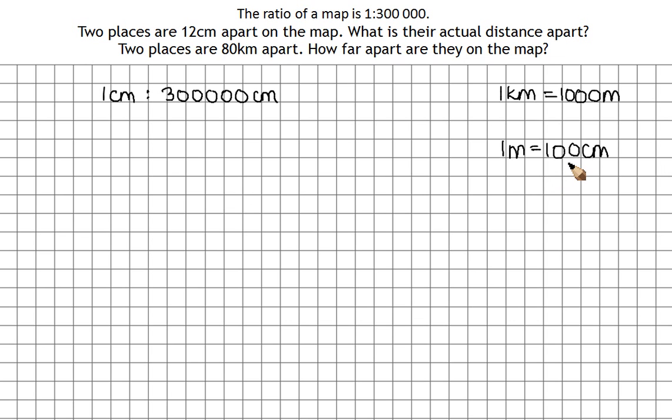If I'm changing centimeters into meters, to get from 100 to 1, I have to divide by 100. And then to get from meters to kilometers, from 1,000 to 1, I have to divide by 1,000.